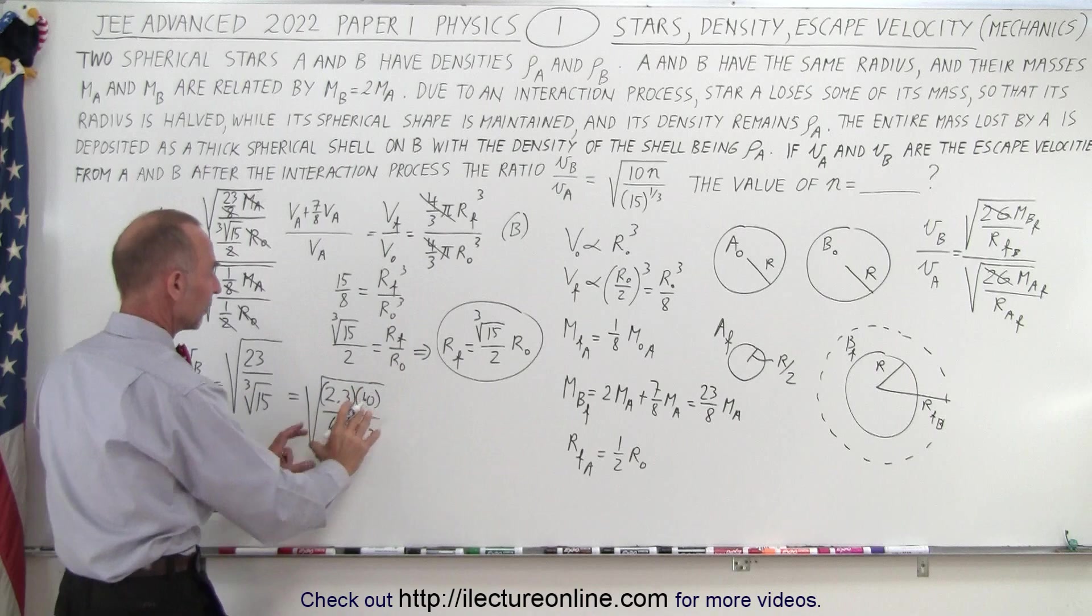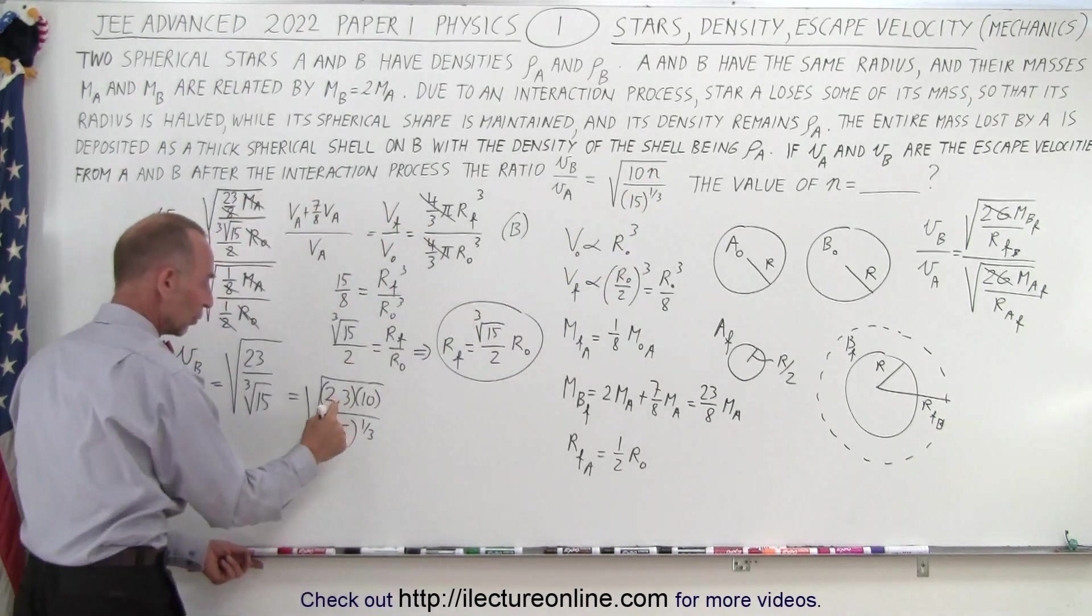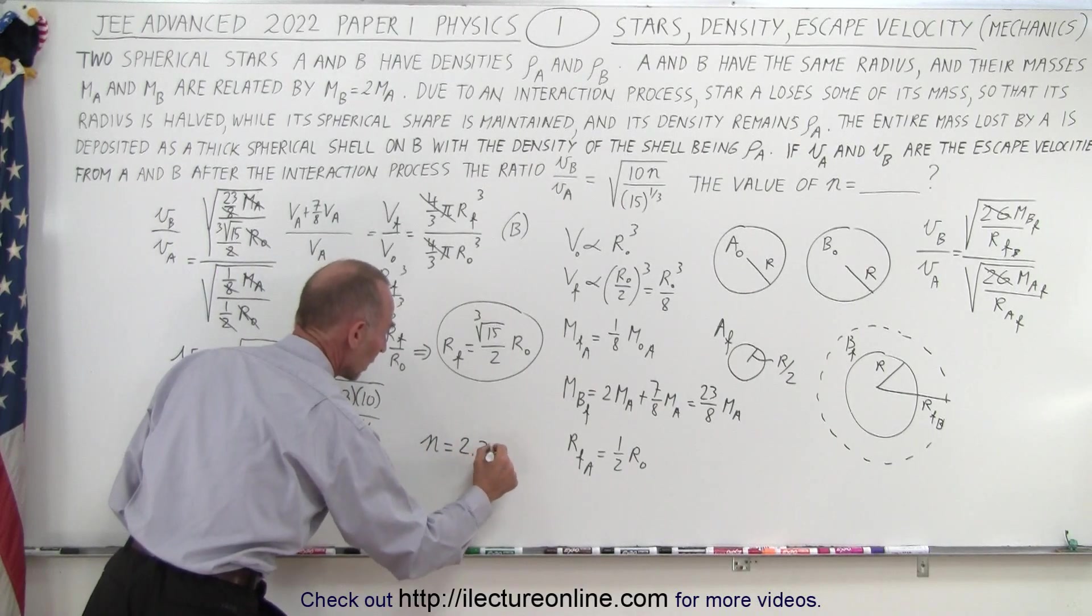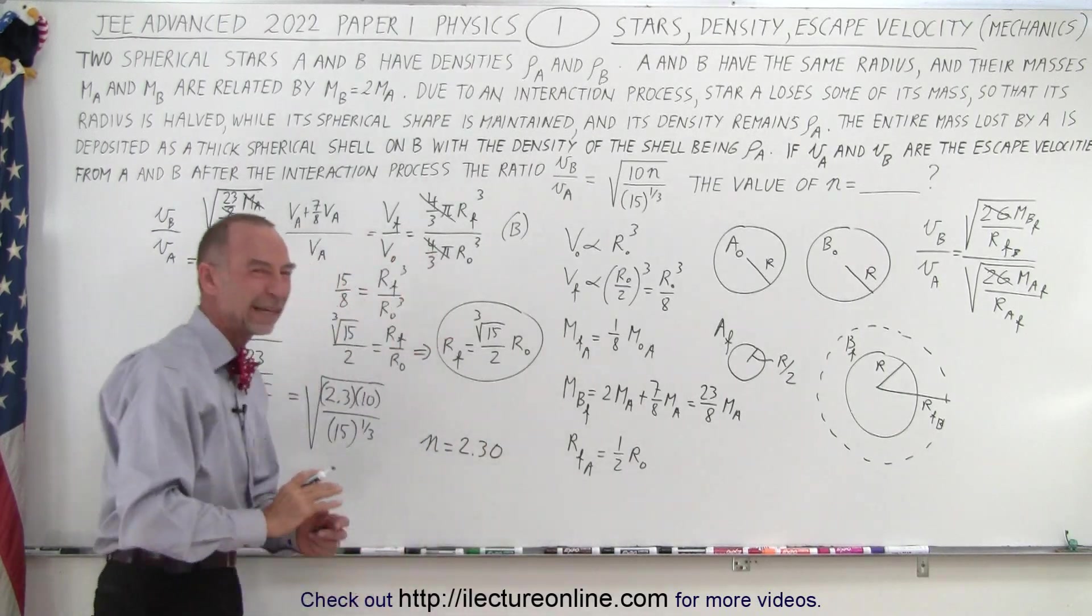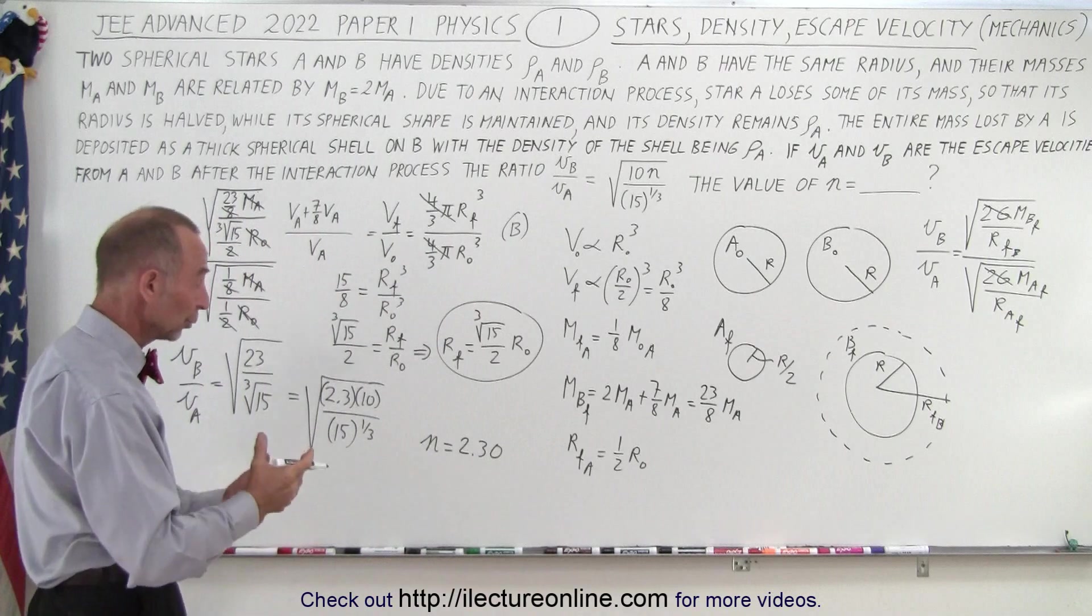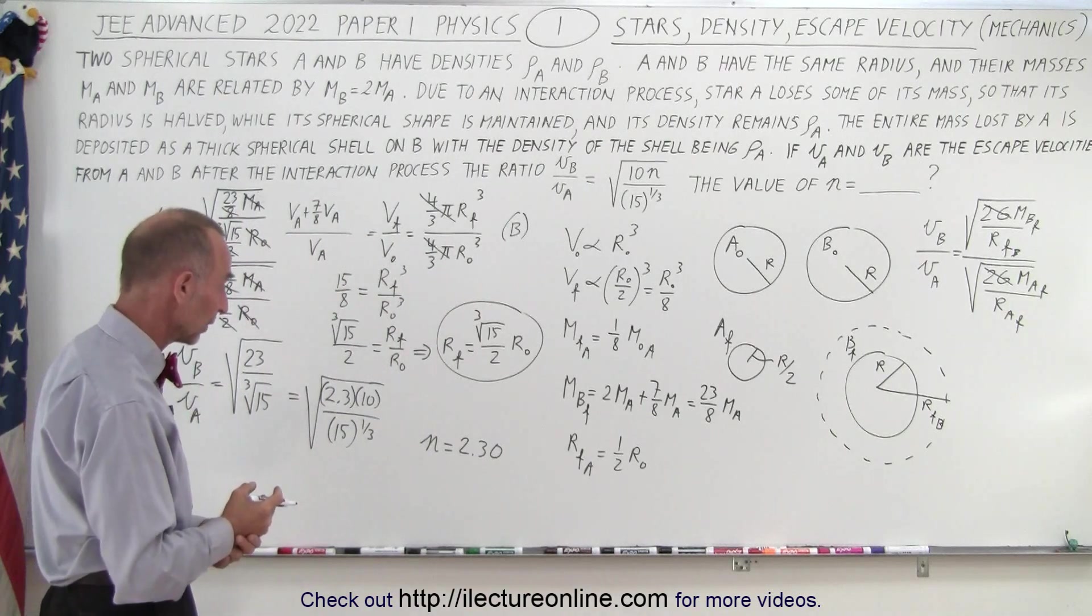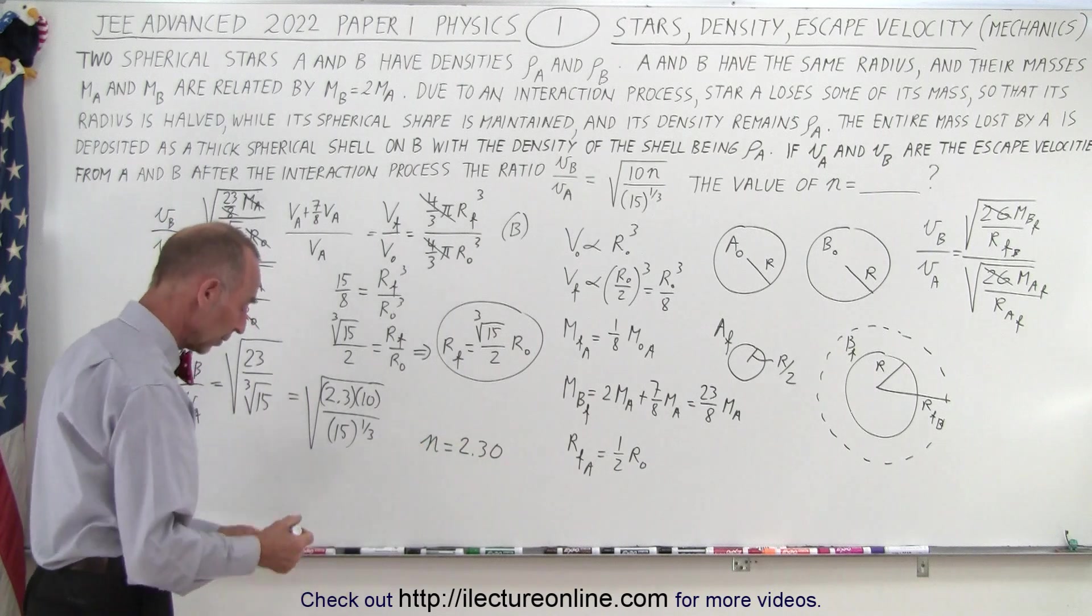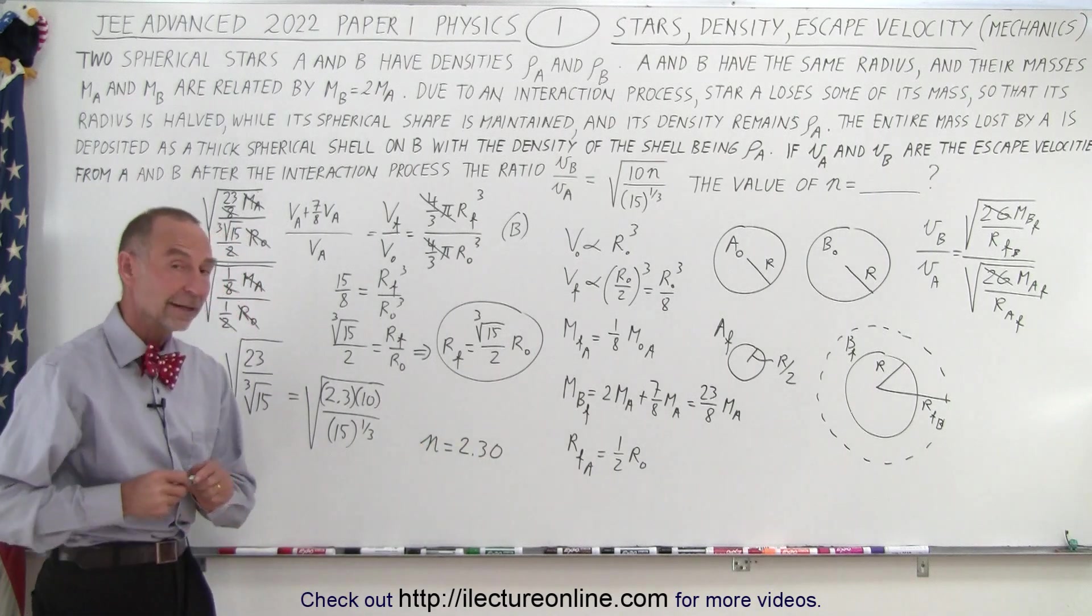Notice that I have everything I need, and N now is equal to 2.3, so we say that N is equal to 2.3, and they want you to carry it out to two decimal places, that's a new rule for 2022, and so therefore we write that N is equal to 2.30, as the final answer in this problem.